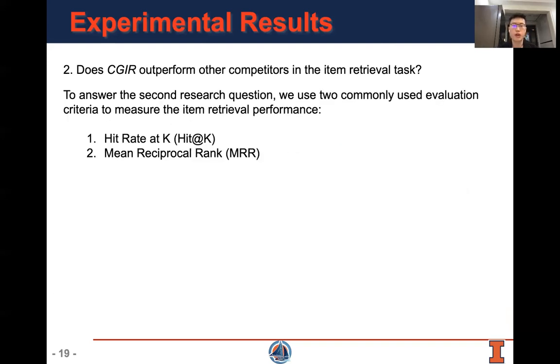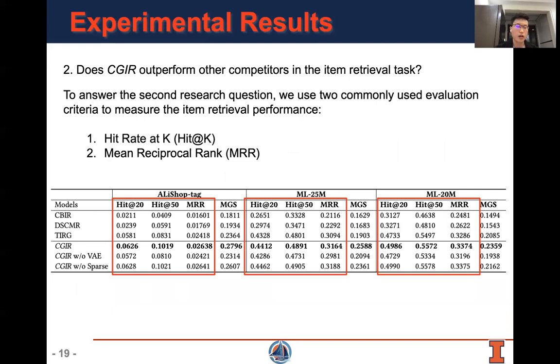To answer the second research question, we used two commonly used evaluation metrics to measure the item retrieval performance. The first is hit rate at k and the second is mean reciprocal rank. In the experiment, we can see our method can outperform all three baselines under hit at 20, hit at 50, and mean reciprocal rank metrics.